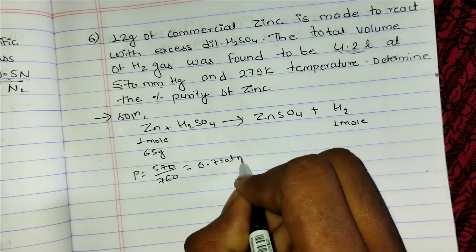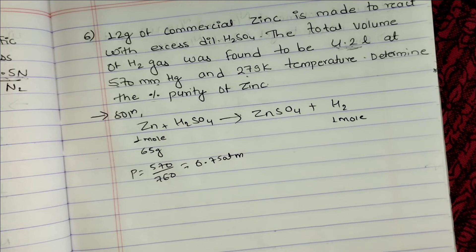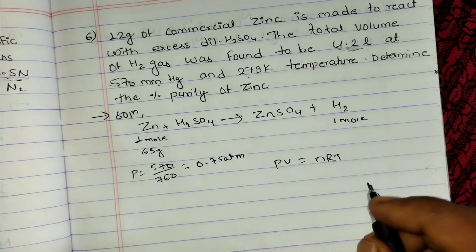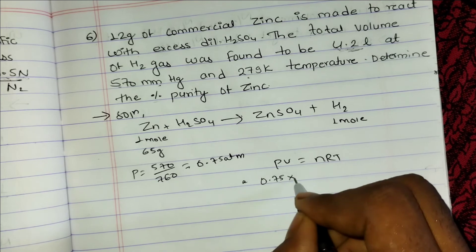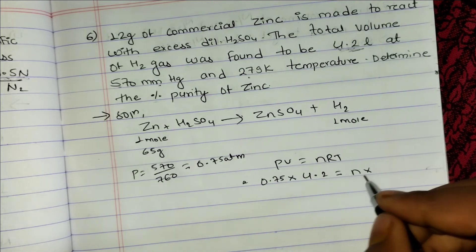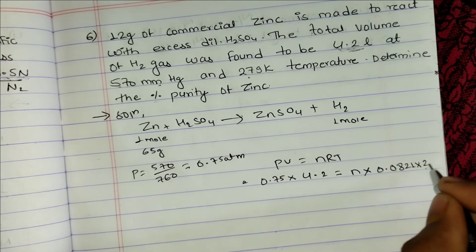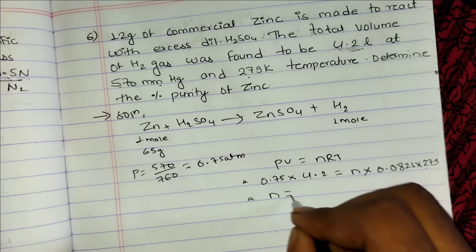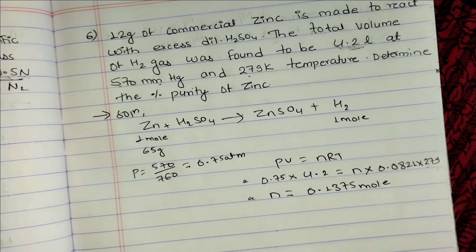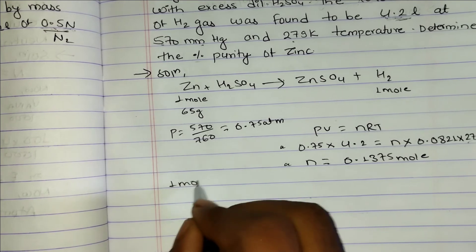Using PV = nRT: pressure = 570/760 = 0.75 atm, volume = 4.2 L, R = 0.0821 L·atm/mol, T = 279 K. Solving: n = PV/RT = (0.75 × 4.2) / (0.0821 × 279) = 0.1375 moles of H₂ produced.